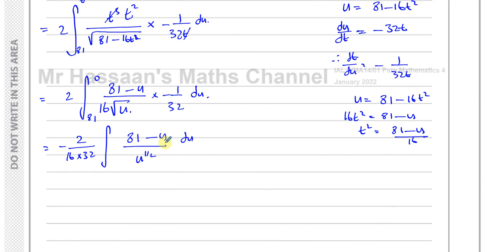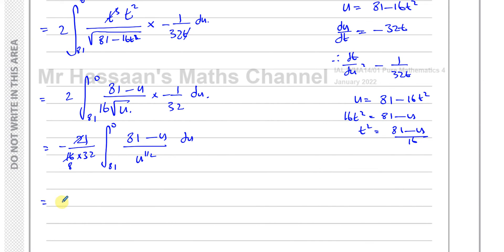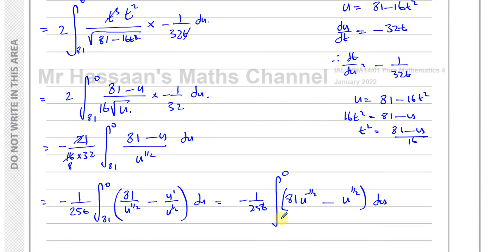Inside the integral I have (81 − u) / u^(1/2), integrated between 0 and 81. Splitting into two fractions: 81/u^(1/2) − u/u^(1/2), which simplifies to 81·u^(−1/2) − u^(1/2). So I have −1/256 times the integral from 0 to 81 of (81·u^(−1/2) − u^(1/2)) du.